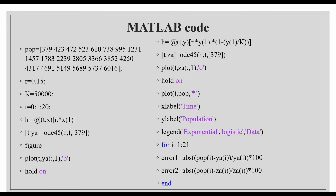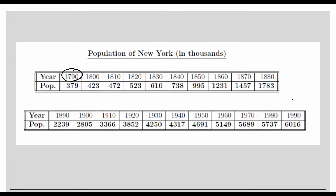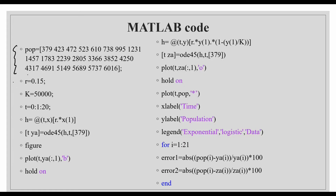Now we look at the MATLAB code. The population data for New York starts at 1790 and ends at 1990. We set the growth rate r = 0.15 and the carrying capacity K = 50,000. We will see how to fit the model to data in a later stage, but here we first learn how to solve ODEs using the built-in function. The data covers 21 years so time t goes from 0 to 20 with a step size of 1.